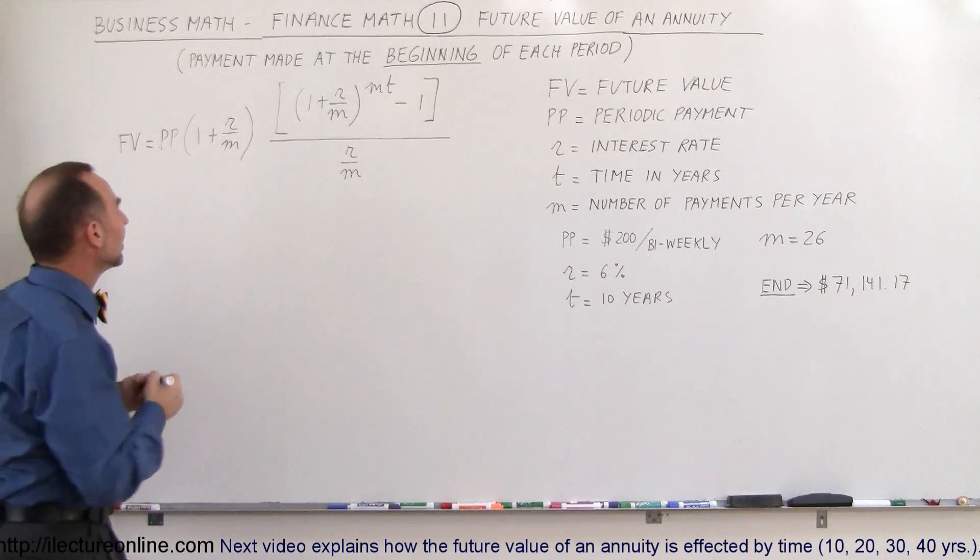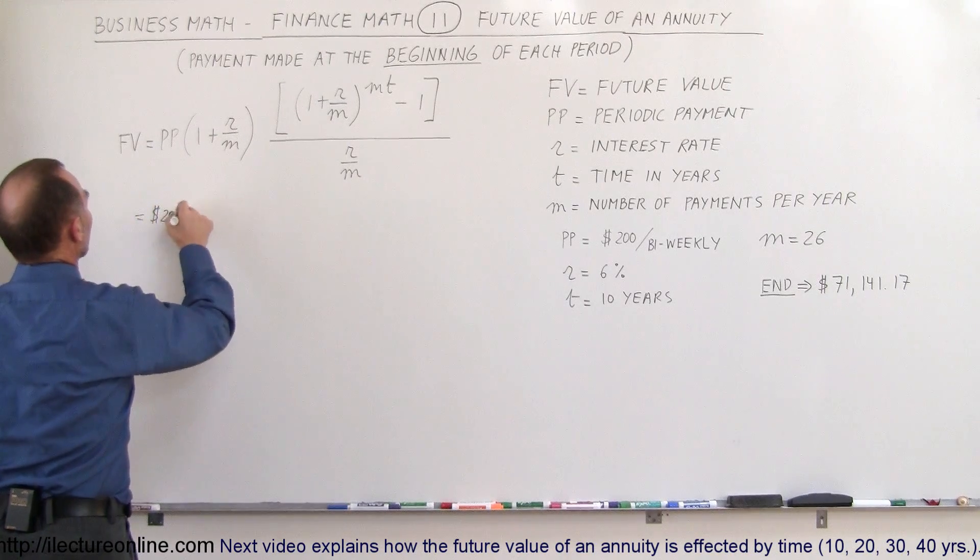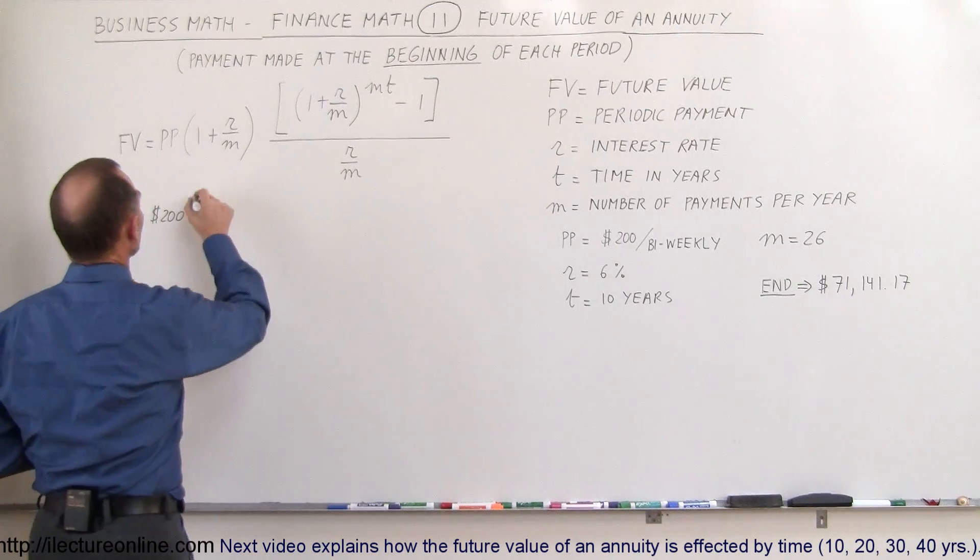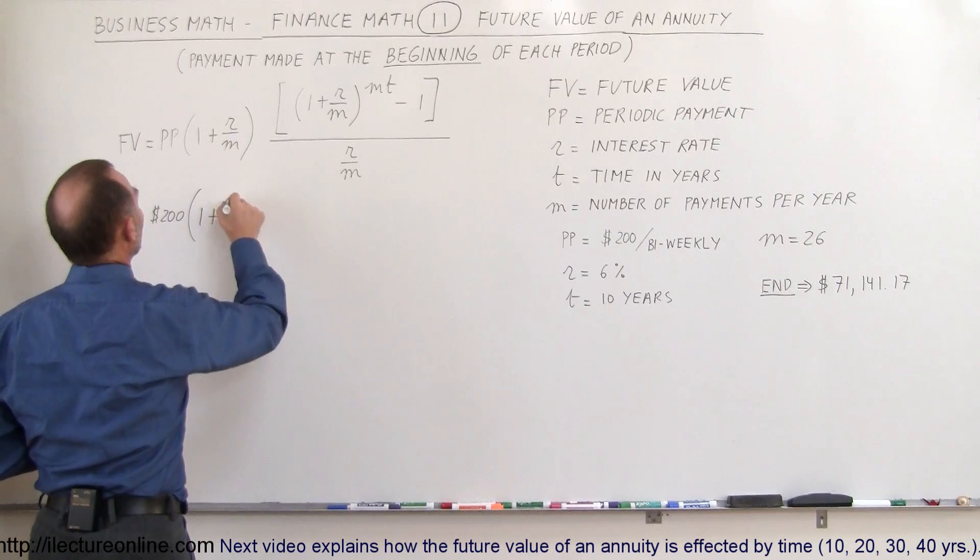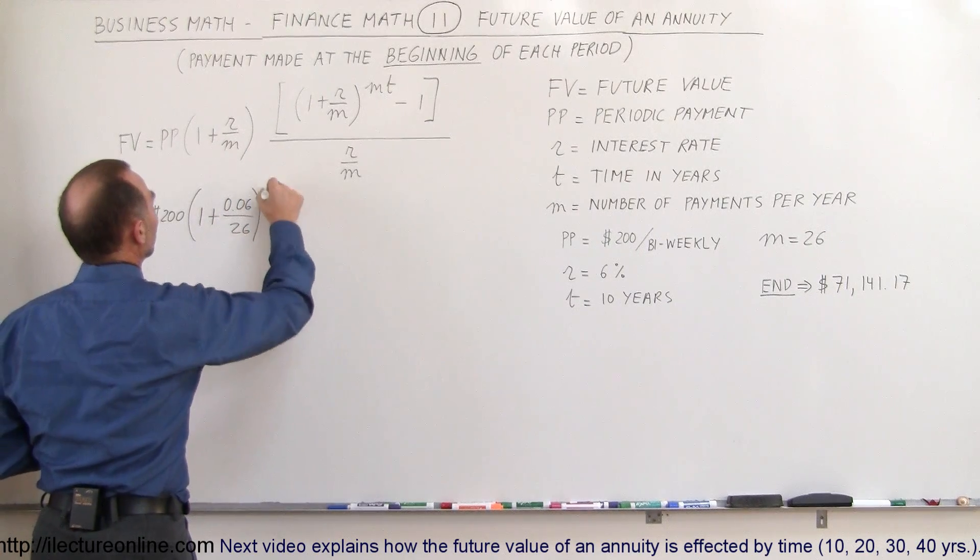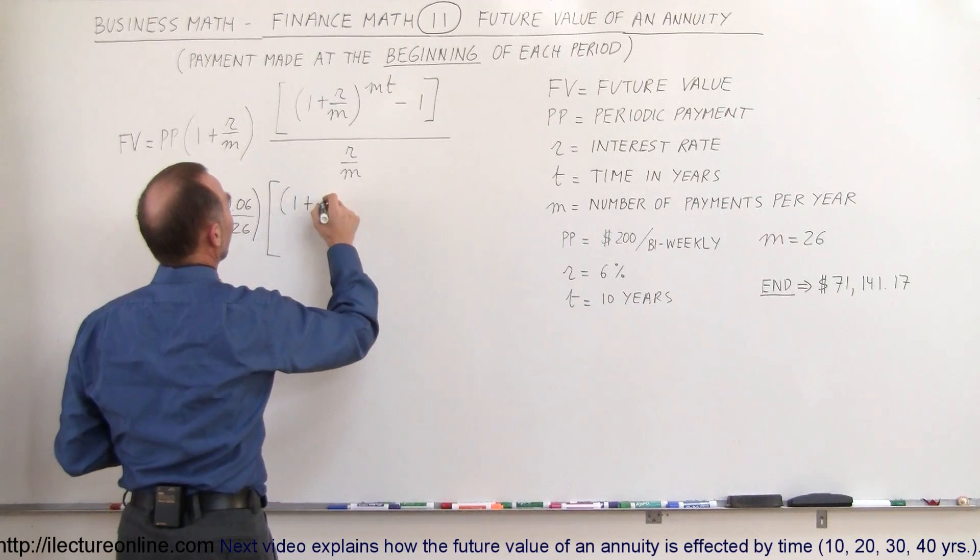Let's see what the different number will be this time. So we have $200 per pay period. There's going to be 26 pay periods per year because it's bi-weekly. So we multiply that times 1 plus the rate, 0.06 divided by 26. And we multiply that times. Here would be 1 plus R over M.